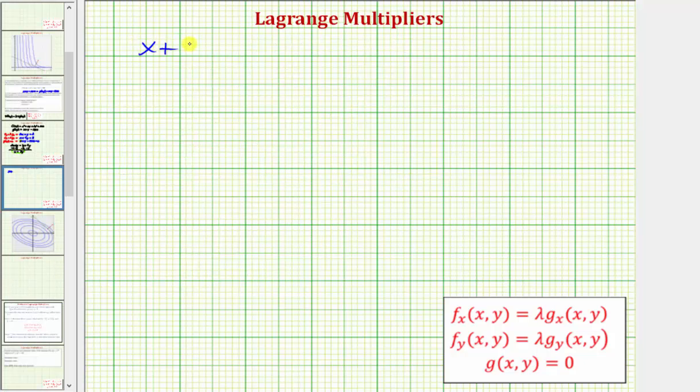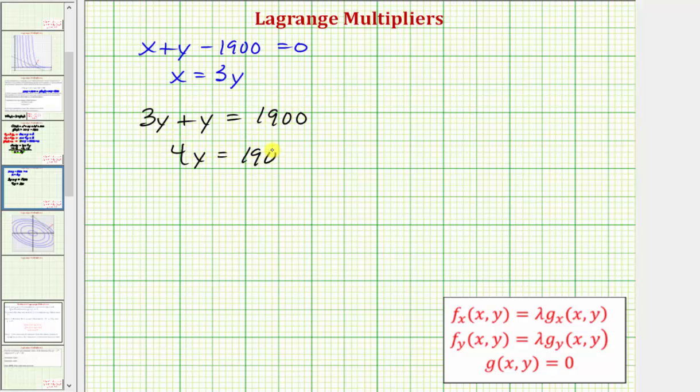Using the constraint x plus y minus 1,900 equals 0, and x equals 3y, performing substitution we'd have 3y plus y equals 1,900. So we have 4y equals 1,900, dividing both sides by 4, we have y equals 475.